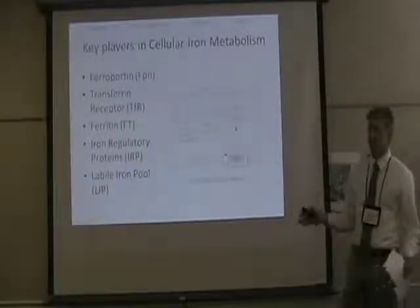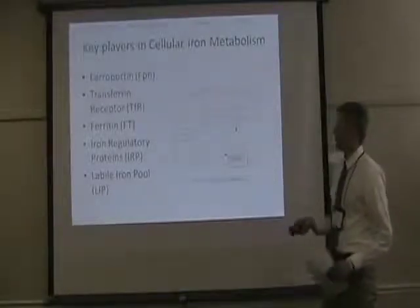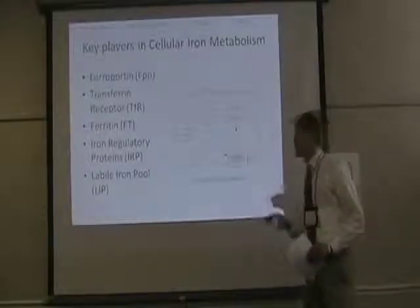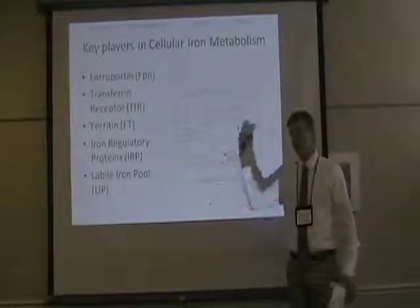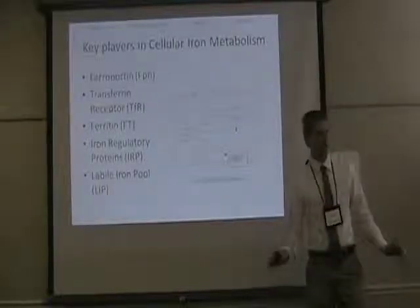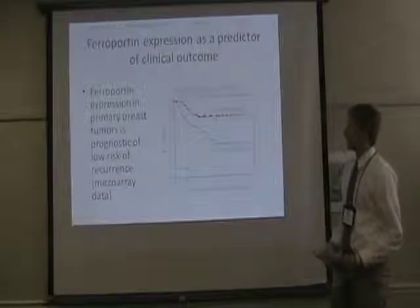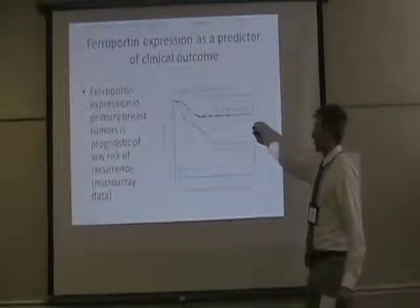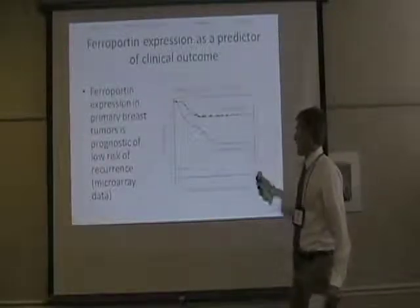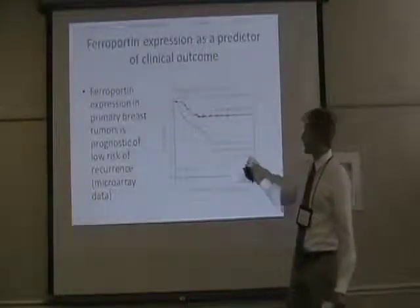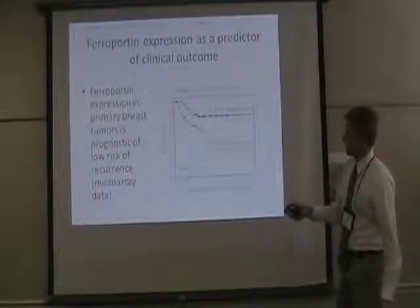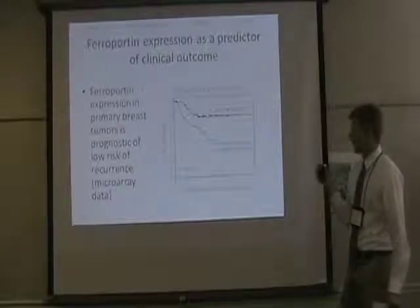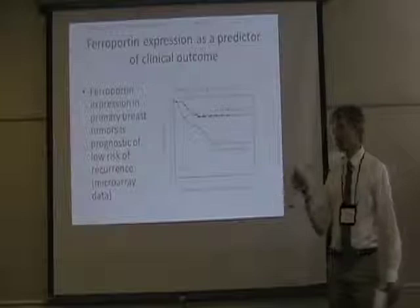The key players in cellular iron metabolism present in breast epithelial cells are: ferroportin, the export protein for iron; transferrin receptor, the import protein for iron; ferritin, the storage protein; iron regulatory protein (IRP), which controls translation of those other proteins; and the labile iron pool (LIP), the biologically available iron in the cell. Ferroportin expression is also an independent predictor of clinical outcome in breast cancer progression — in a sample of 103 patients, those with high ferroportin had a higher probability of survival, making ferroportin's independent predictive capability the reason we're examining iron.